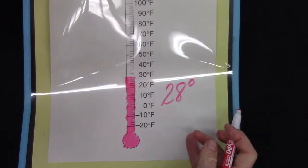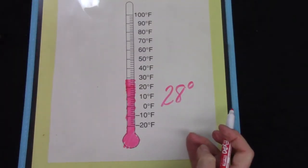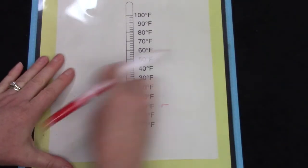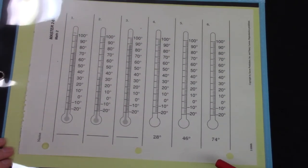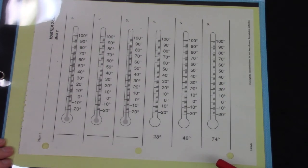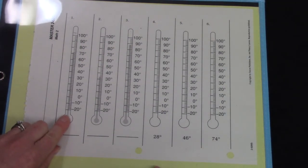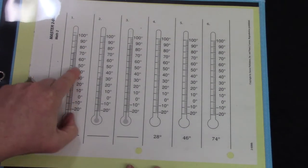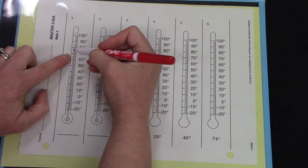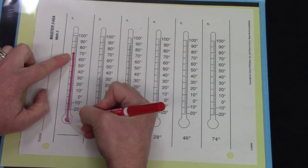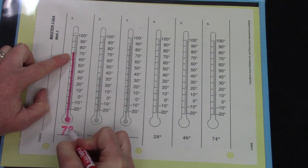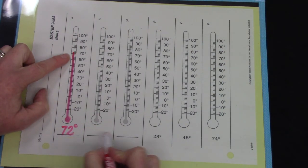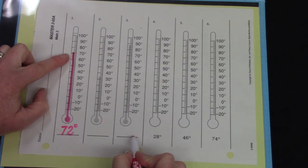I put mine in a plastic page protector so that I can do it over and over and over again and just erase it. You might have a page that looks like this as well. And if you have a page that looks like this, you can practice by figuring out all of the temperatures. This first one goes all the way up here to one line above 70. So that would be 72 degrees.